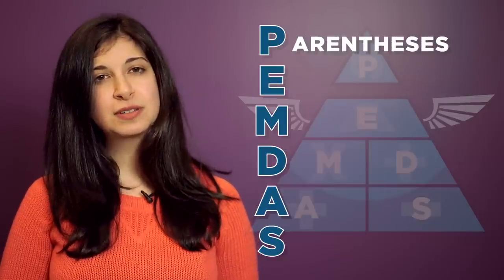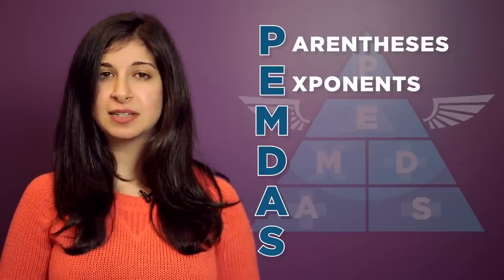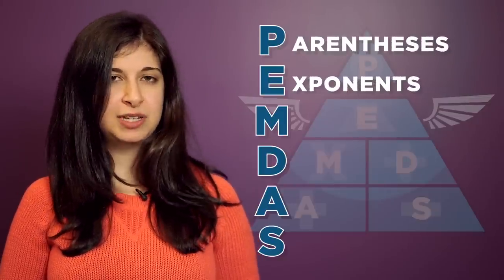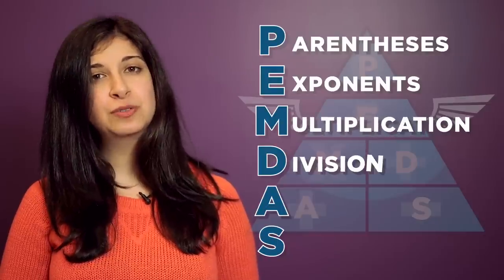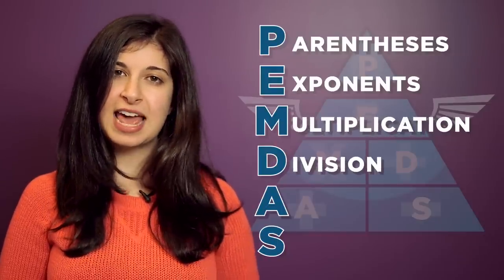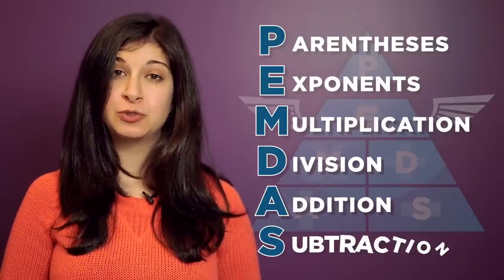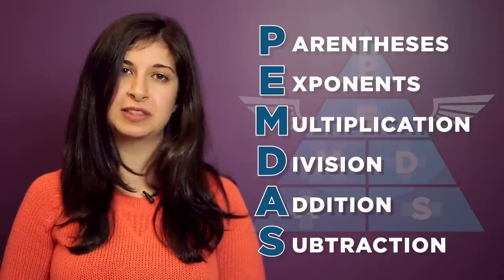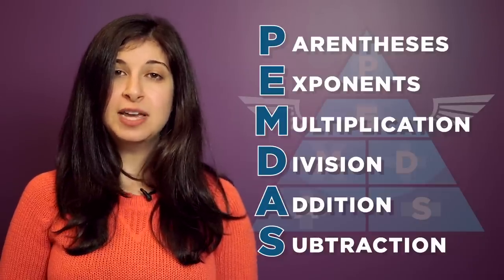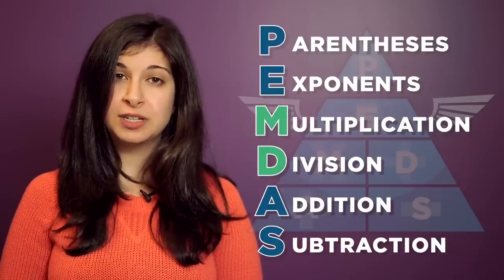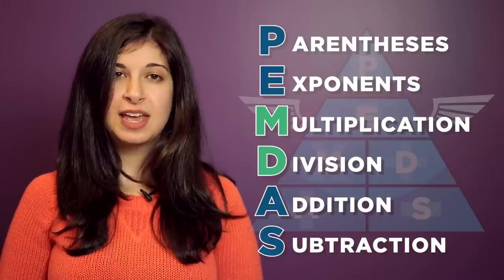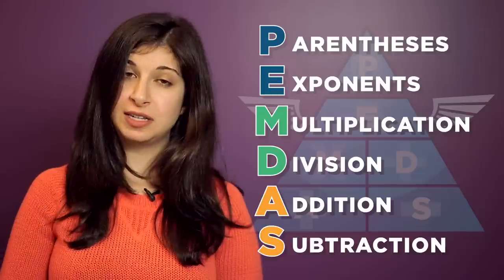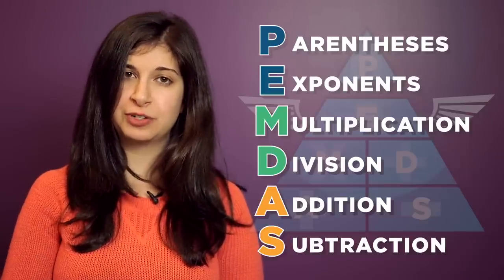So again, PEMDAS stands for P, parentheses first, E, exponents next, then MD, multiplication and division, which is done left to right. And finally, AS for addition and subtraction, which is also done left to right. Divide and multiply rank equally and go left to right. Add and subtract rank equally as well and go left to right.